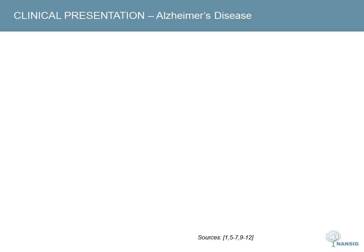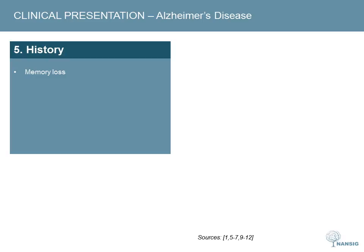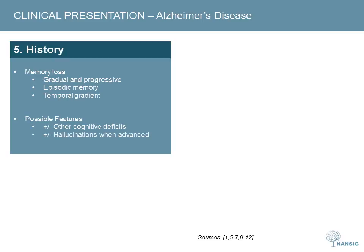In terms of assessment and management, we'll focus on things which make each type of dementia stand out from the general syndrome. Memory loss is the most prominent feature of Alzheimer's disease — gradual and progressive episodic memory loss with a temporal gradient. In other words, it is harder to remember recent events while more distant memories are easier to recall. Memory loss is usually the most pronounced cognitive deficit, although other cognitive domains can also be affected. Some patients develop hallucinations, but remember that hallucinations are more typically associated with Lewy body dementia.